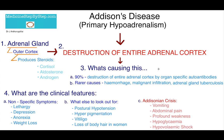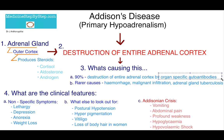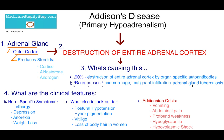So what's causing this? In the majority of cases — 90% — the destruction is caused by organ-specific autoantibodies. This is associated with other autoimmune conditions, so in these patients look out for autoimmune thyroid disease, type 1 diabetes, pernicious anemia, and ovarian failure. There are other rarer causes such as hemorrhage, malignant infiltration, and tuberculosis of the adrenal gland.